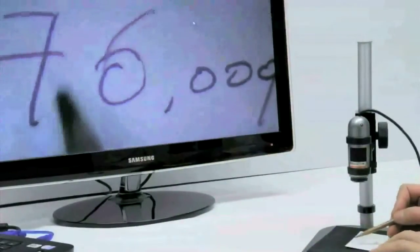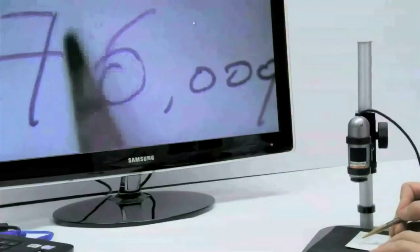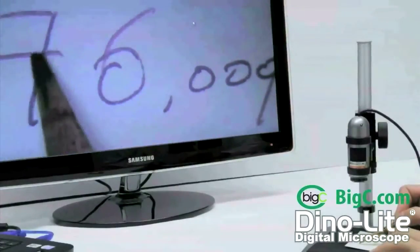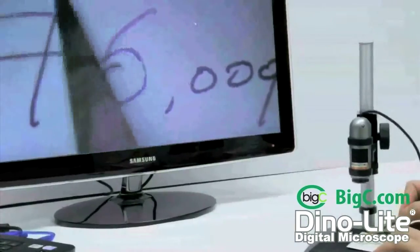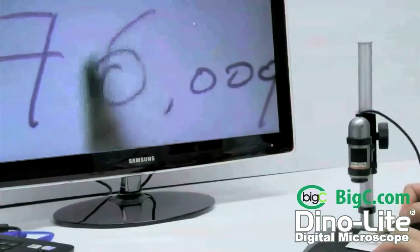Getting closer to the object, one can see that using the IR light, the 7, the 6, and the 9 have been written with two different brands of pen.